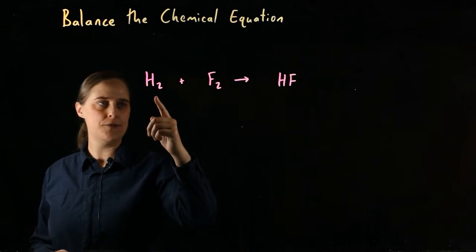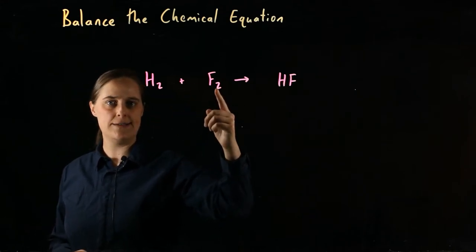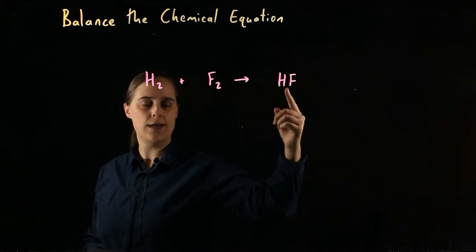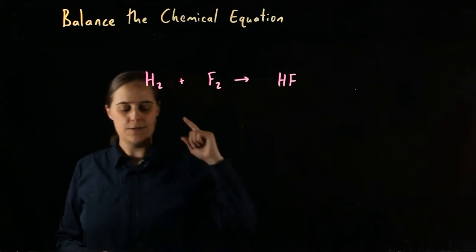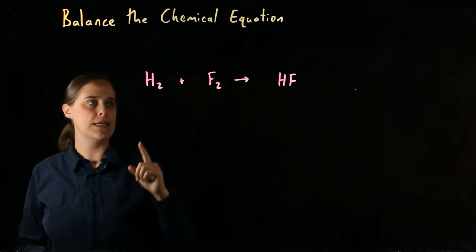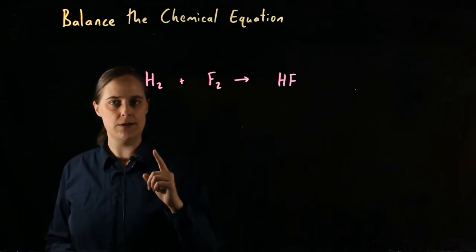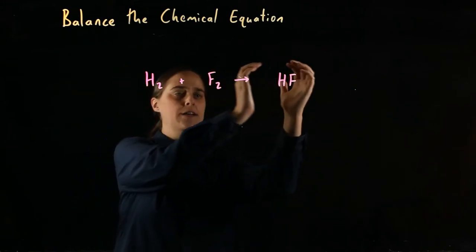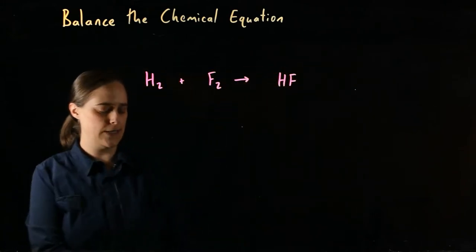Hydrogen gas H₂ plus fluorine gas F₂ is reacting to make hydrofluoric acid HF. The first step in all of these problems is to count how many atoms of each element you have before the reaction versus after the reaction.